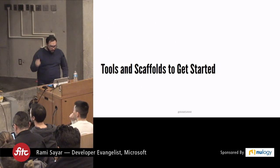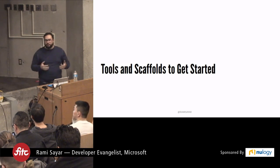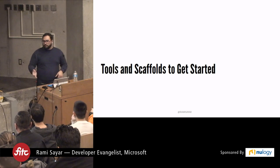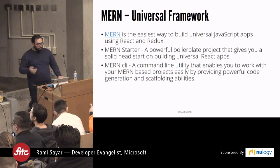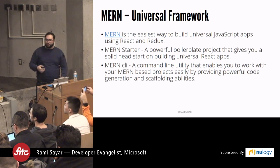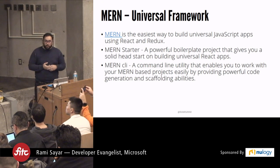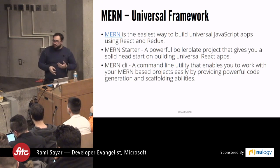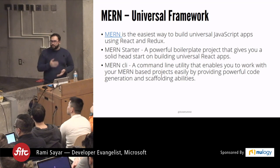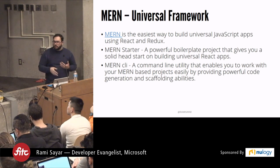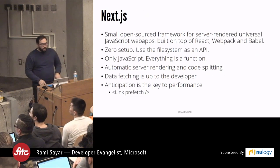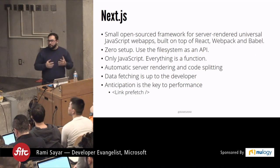If you want a framework or scaffold for universal React apps, here are a few. The first is called Myrn — they call themselves the easiest way to build universal JavaScript applications using React and Redux. It follows an MVC-like pattern, does the job well, and has a CLI tool that lets you keep adding things to your project after the initial scaffold.